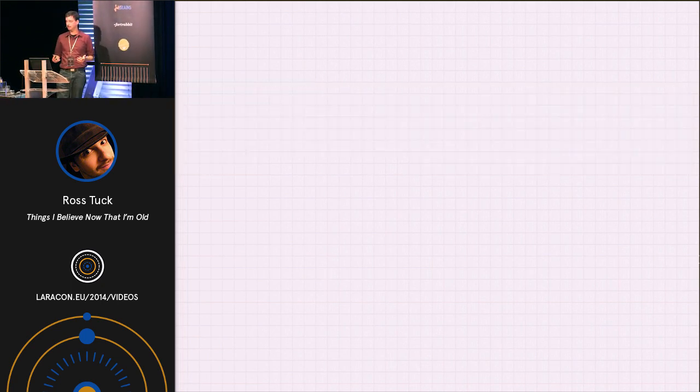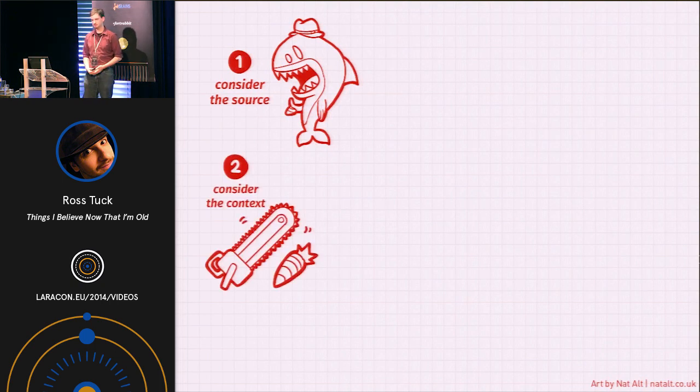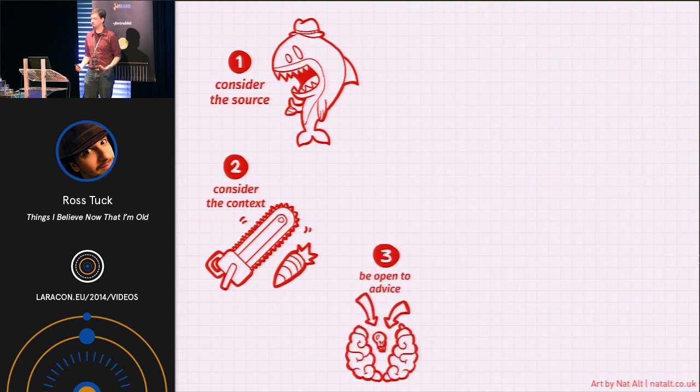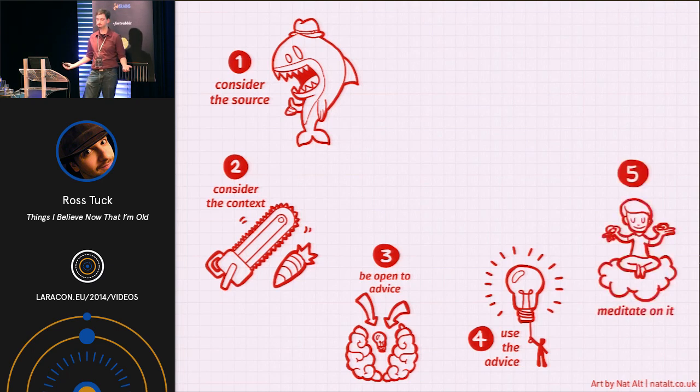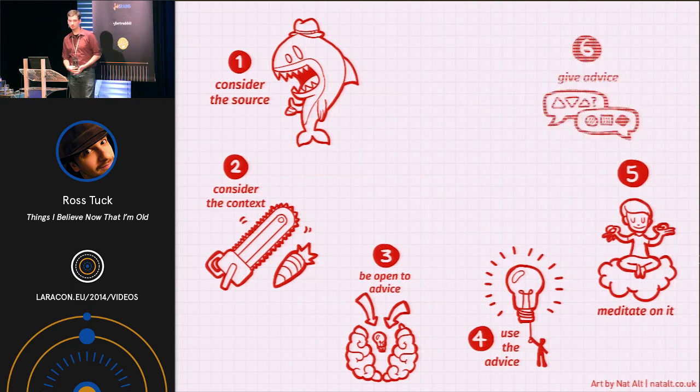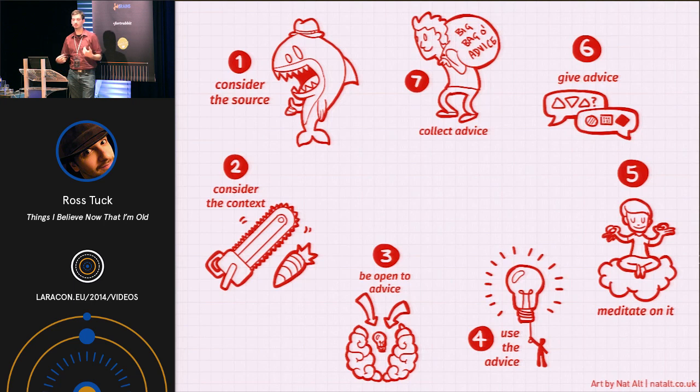So that's about all the time I have for today. Let's just give you a quick recap one more time. When someone gives you a piece of advice, consider the source. Consider the person giving you the advice. Consider the context. Is it applicable to you? Be open to the advice, even if you don't want to hear it. Especially if you don't want to hear it. Use the advice. Otherwise, it doesn't mean a damn. After some time has passed, meditate on it. Meditate on the advice and ask yourself the hard questions. And then finally, pass it on to somebody else. You know, if it worked for you, recommend it. If it didn't work for you, warn them off of it. And that should open you up to the possibility of collecting more advice.